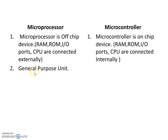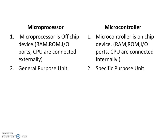Microprocessor is the general purpose unit and microcontroller is the specific purpose unit. General purpose unit means a single chip of IC can be used for different purposes. And specific purpose means the single chip of IC is used to perform a specific task only. For example, AC is used to cool the air — this is a specific task for AC. So in AC, we can use a microcontroller.